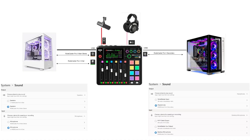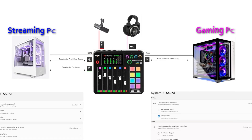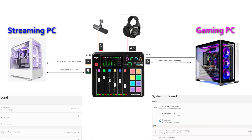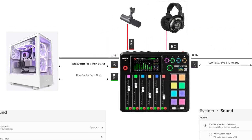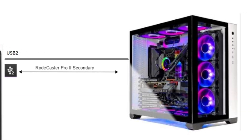Let's start with a simple diagram of the connections and what to configure on each PC. Starting with just the physical connections: streaming PC on the left, gaming PC on the right. Your USB 1 connection goes to your streaming PC, USB 2 goes to your gaming PC. Plug your microphone into microphone one and your headphones into headphone one. On the streaming computer, you'll see Roadcaster Pro 2 Main Stereo and Roadcaster Pro 2 Chat. On the USB 2 side for the gaming computer, you'll see Roadcaster Pro 2 Secondary.